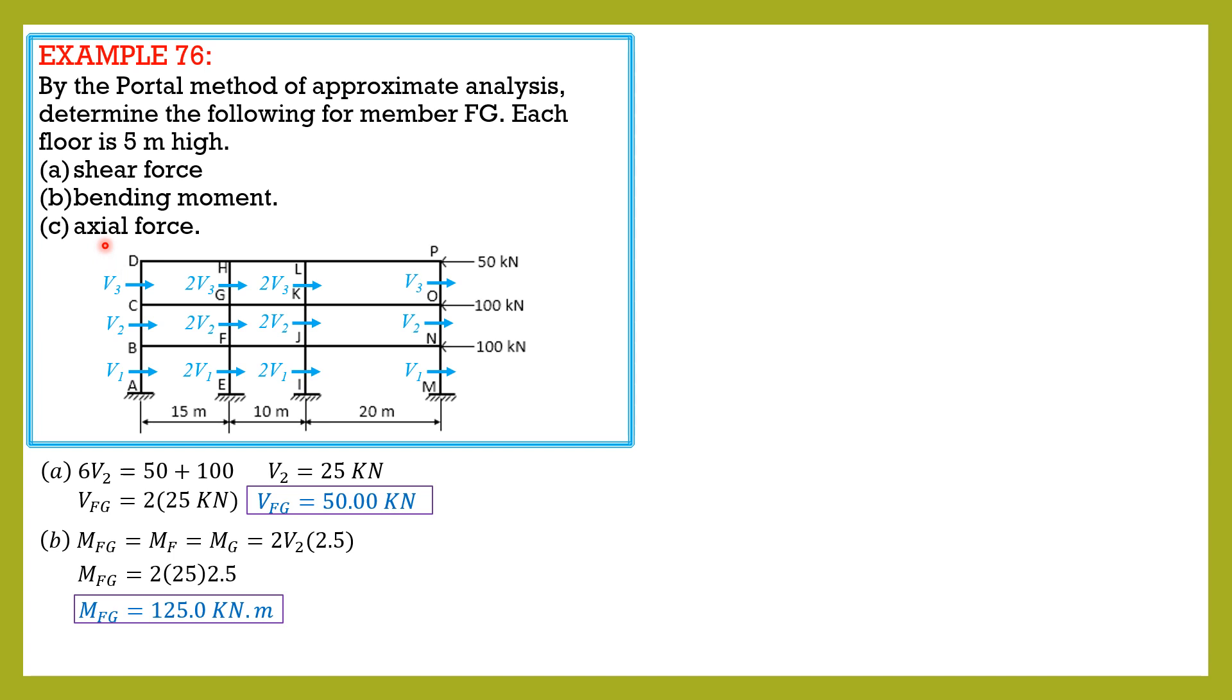Finally, for the axial force, we need to draw free body diagram of this portion and this portion here. So we need v3. 50 equals 6v3, v3 is equal to 8.33 kilonewtons.